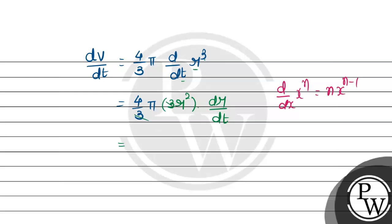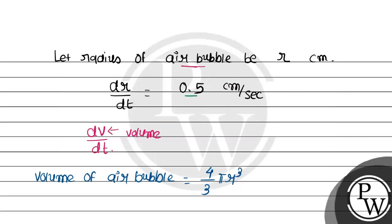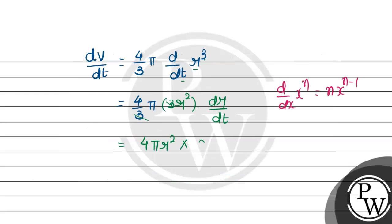Simplifying the terms, we get 4 pi r squared. And dr/dt is given as 0.5. So this becomes 2 pi r squared. This gives us dV/dt.